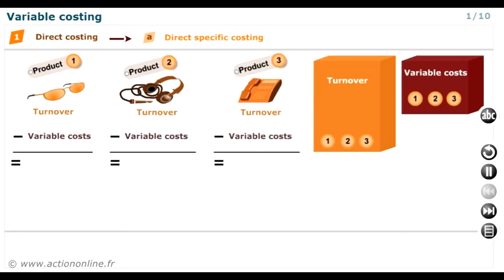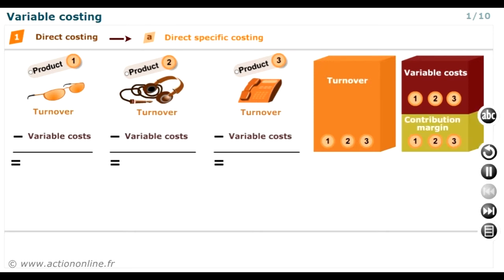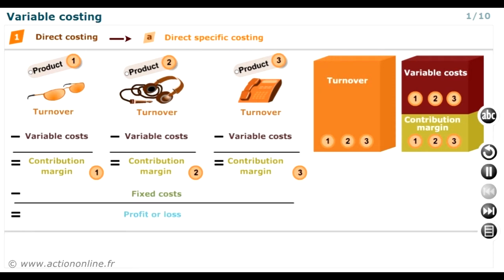Once this is done, the contribution margin is calculated, which we can express as a percentage of turnover to obtain the percentage contribution margin. The fixed costs are dealt with separately in a shared pool, where they are considered to be incurred for the company as a whole.